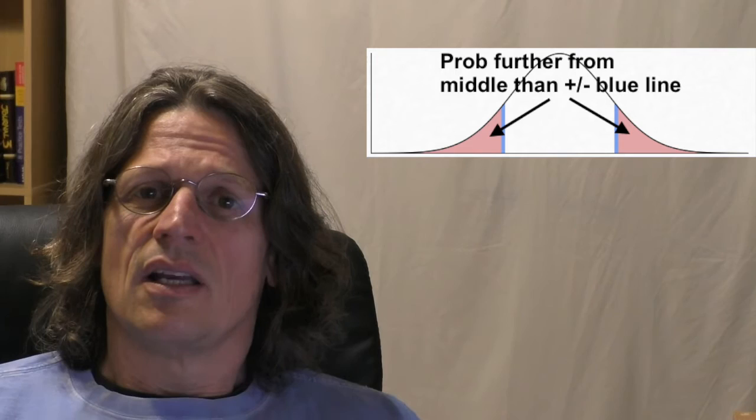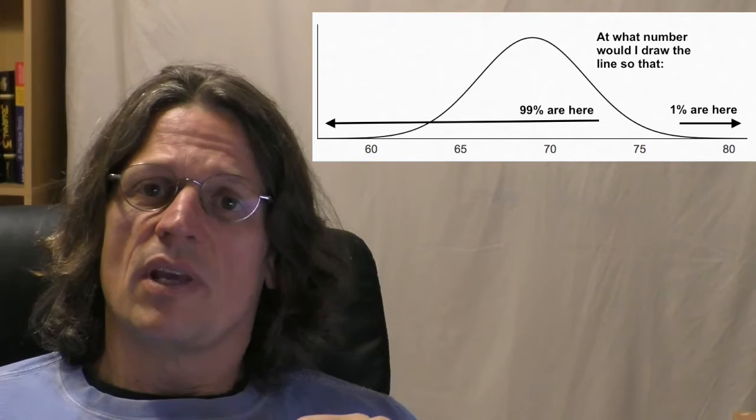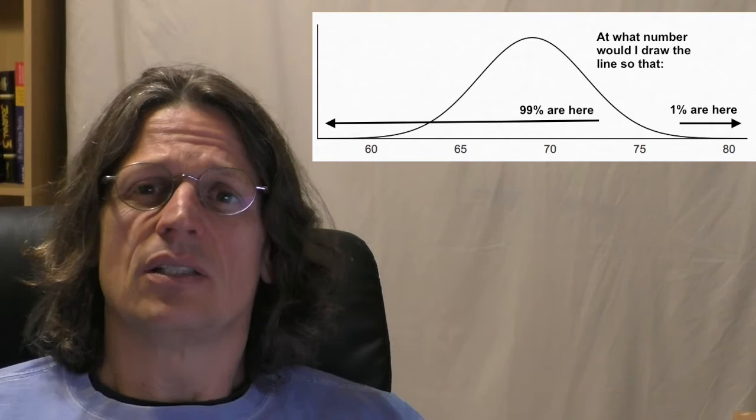We could also do an exclusive range — what percentage of people are less than 5 or greater than 6 — but instead I want to show you an alternative thing we can do with the normal distribution. I've been giving you numbers and asking for probabilities, but you can invert the normal distribution and say: given a probability, what number matches that probability? For example, what's the cutoff for which only 1% of males are taller? What height is that? So if I want to be a 1-percenter in height, how tall do I have to be?